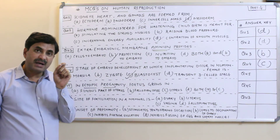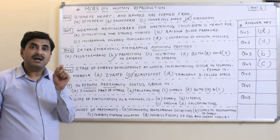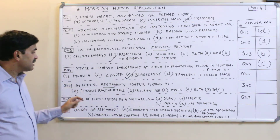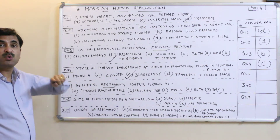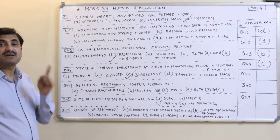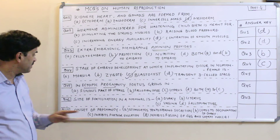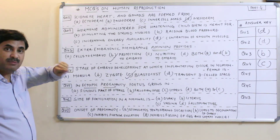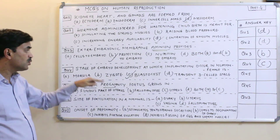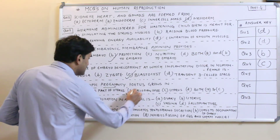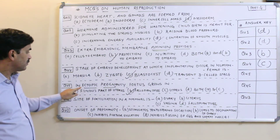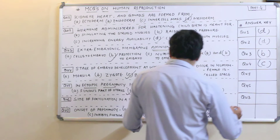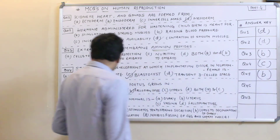Question number five: what happens in ectopic pregnancy? In ectopic pregnancy, implantation does not occur on the endometrium of the uterus. Instead, the fetus grows in the fallopian tube. The fetus fails to reach the endometrium and grows in the fallopian tube. Question number five answer is B — fallopian tube.